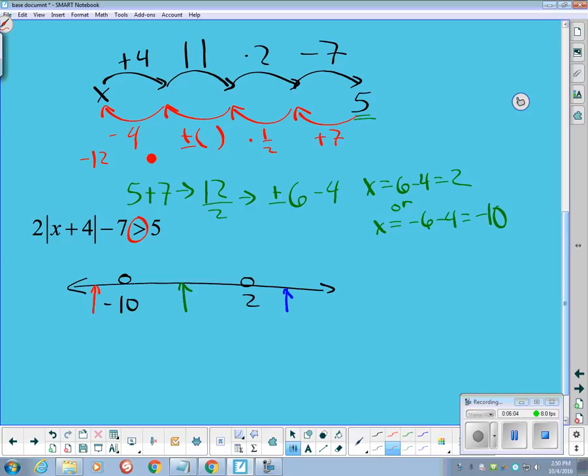Negative 12 plus 4 is negative 8. The absolute value of that is 8 times 2 is 16. 16 minus 7 is 9. And 9 is bigger than 5, which is what we're looking for. So this is a good value.